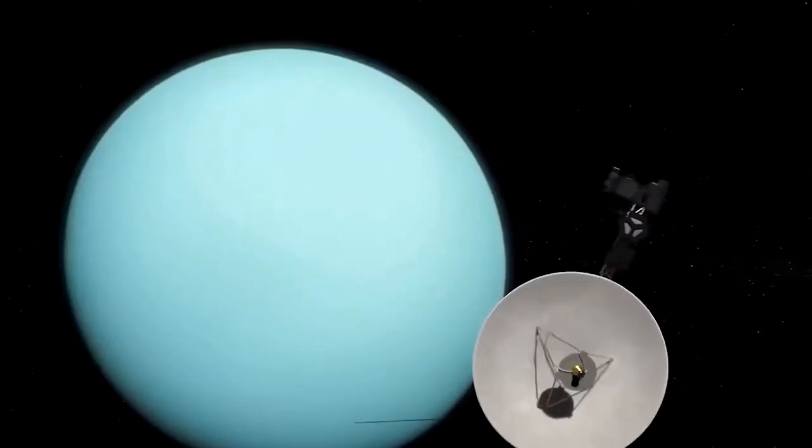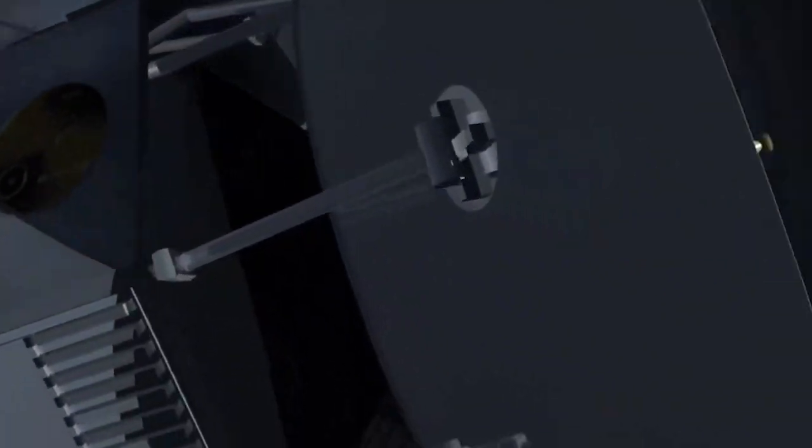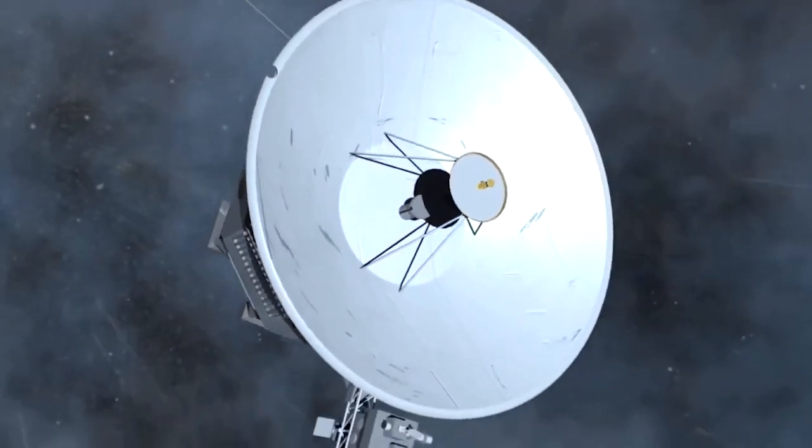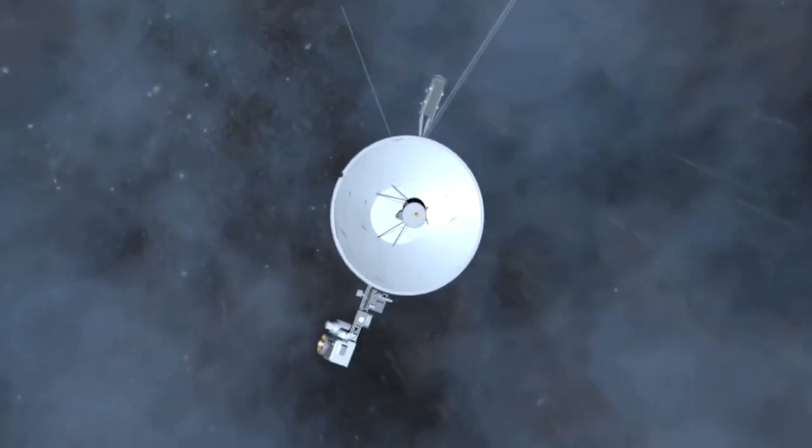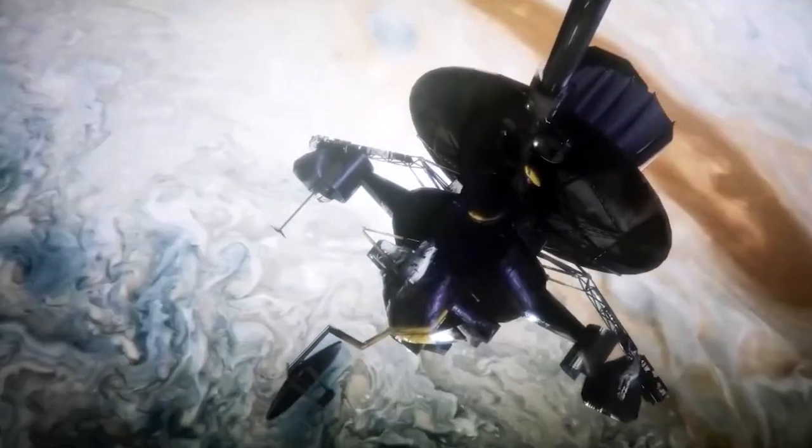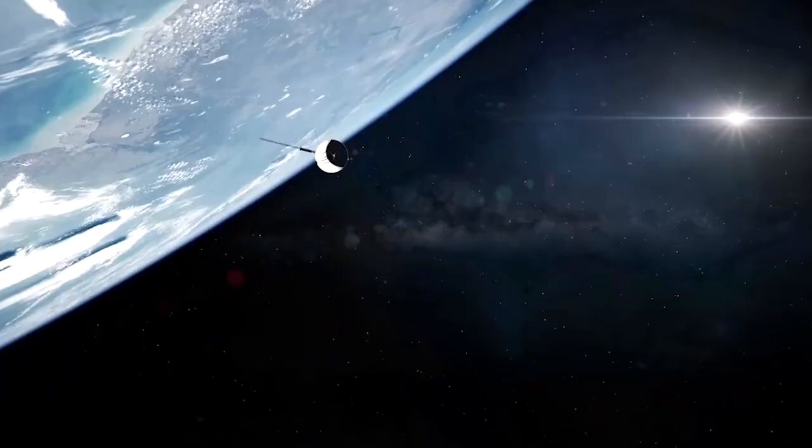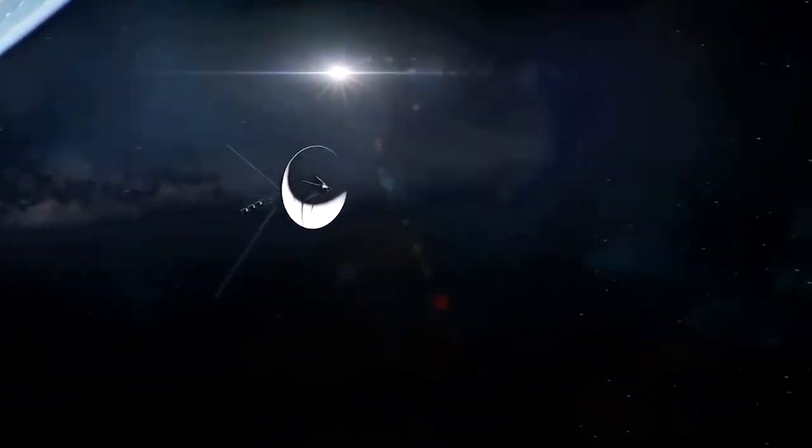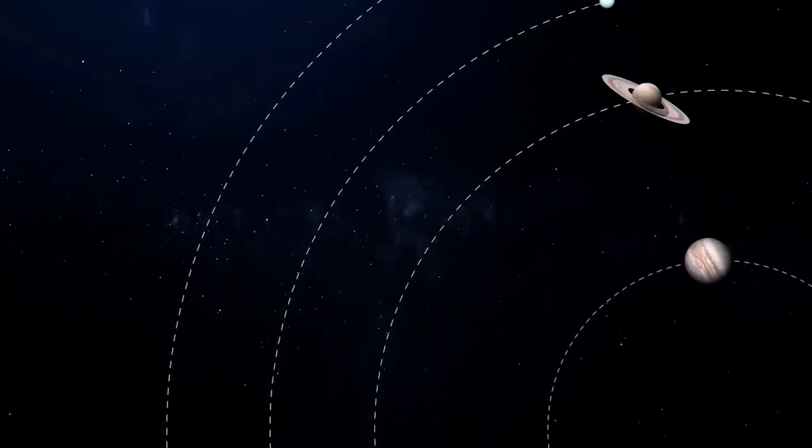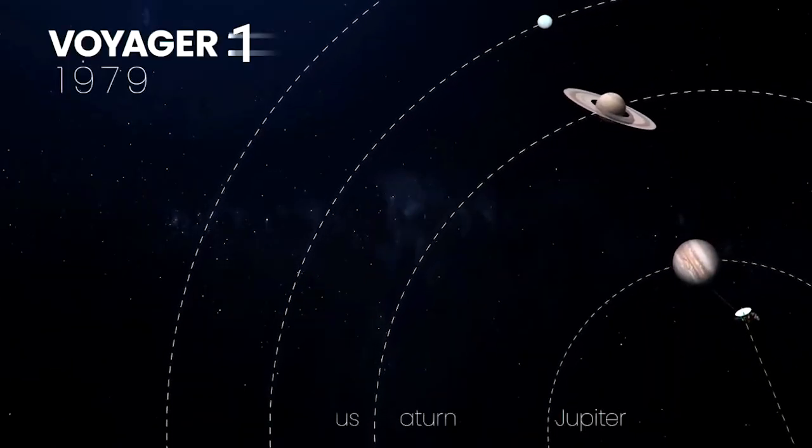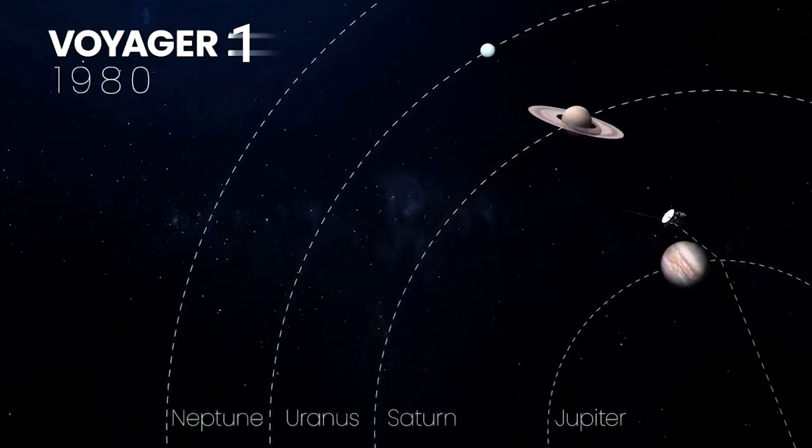Even though Voyager 2 was the first one to launch from Earth, the route it took to the stars meant that it would be the second in the race to reach the heliosphere. The scope of the mission was to study the outer part of the solar system and gain knowledge about the outer planets and their moons. Voyager 1 had to study the planetary systems of Jupiter and Saturn, and Voyager 2 had to study Uranus and Neptune.